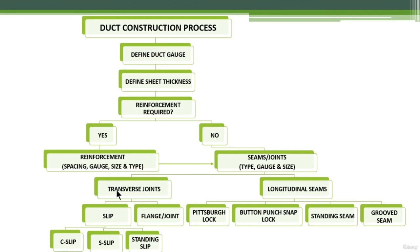On the longitudinal seams, there are four main types: the Pittsburgh lock, the button punch snap lock, the standing seam, and the groove seam. In almost 90 percent of cases, the Pittsburgh lock is the preferred method for longitudinal seams. Similarly, for transverse joints, the C-slip and S-slip are almost always used.